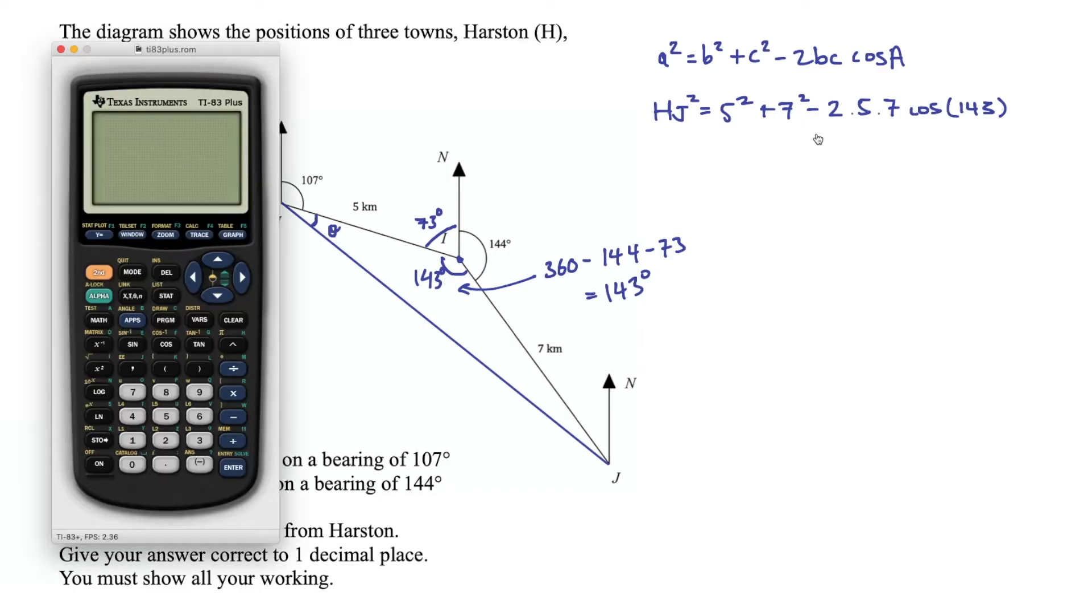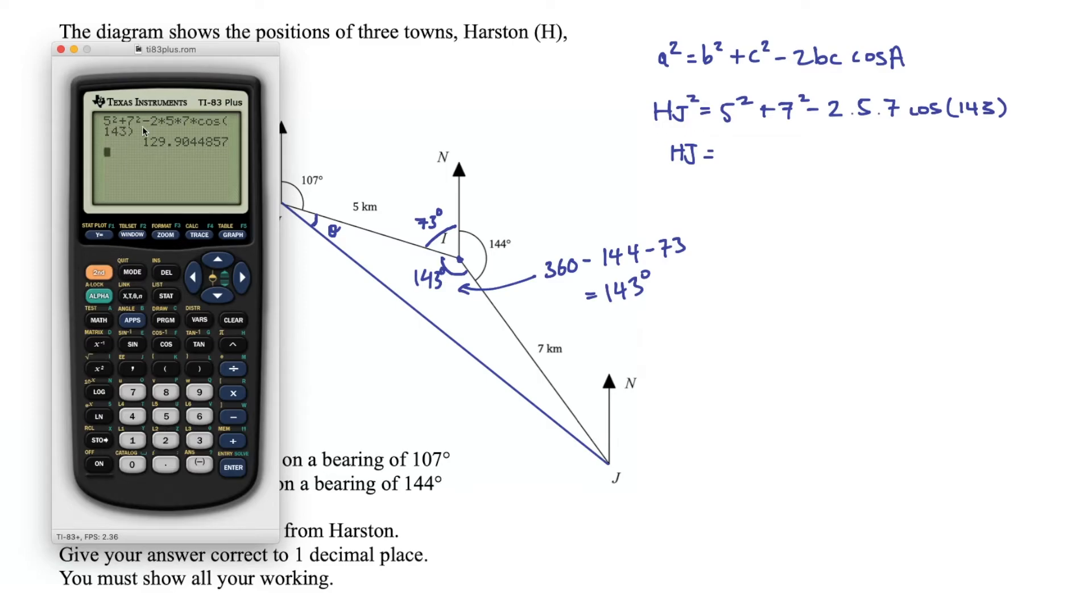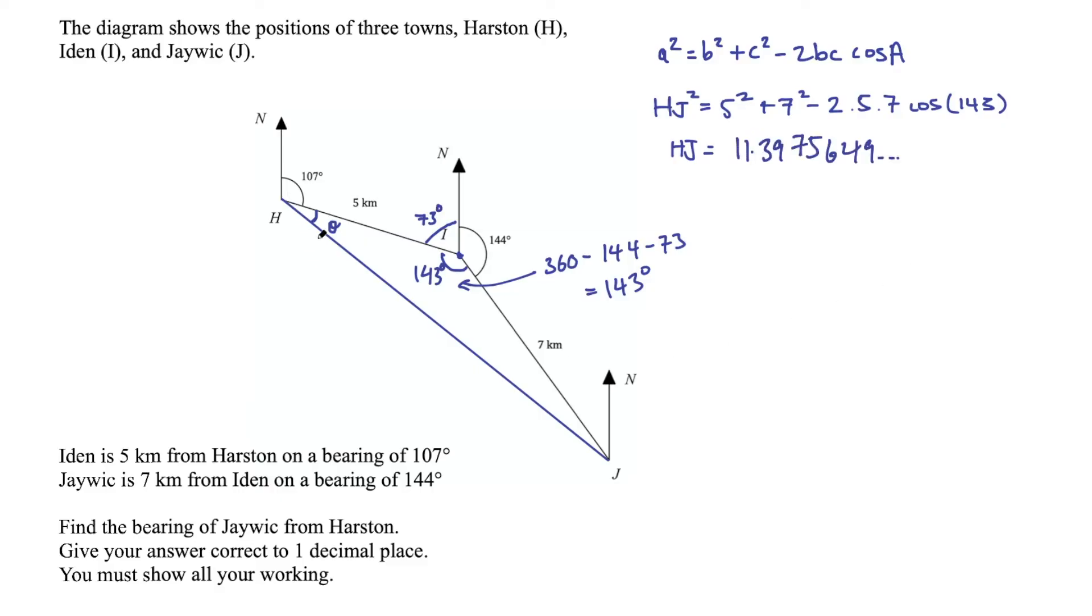So let's get our calculators out then. Obviously, your calculator will look different to mine, but it can do all the same things as this one. Plug those numbers in. So 5 squared plus 7 squared take 2 times 5 times 7 multiplied by the cosine of 143 equals, and then remember to take the square root because this is HJ squared. So HJ will equal the square root of this number. Now, you could do that all in one step. I prefer to plug that in first, then take the square root of the answer. I just find it easier to enter in the calculator. So take the square root of that answer, and I get 11.3975649. So I'd write down that whole number, and also keep it on your calculator because you can use it again in the next calculation, but write down all of the decimals. So 3975649.